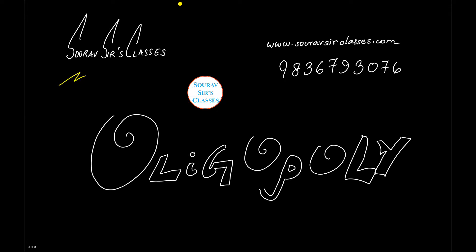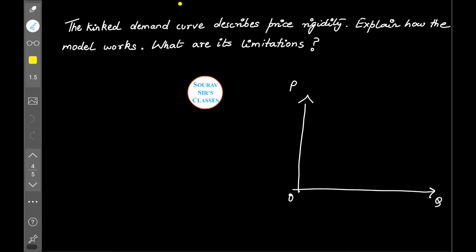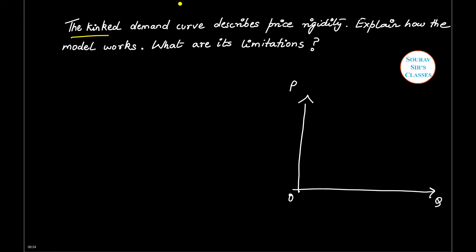Hello and a very warm welcome to Saurav Sir's Classes. Today's tutorial will be on oligopoly. In case of any query, you can contact us on this number. If you wish to know more about us, you can check our website. In today's tutorial, this question will be answered: The kinked demand curve describes price rigidity. Explain how the model works and what are its limitations.